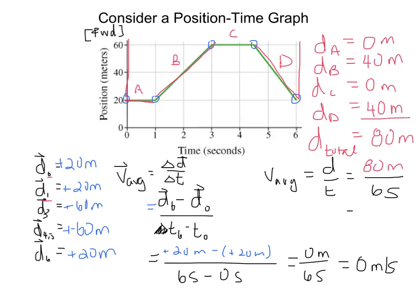And we end up with an answer of 13.3 repeating meters per second. So I'm going to just round that to 13 meters per second, which is obviously a different answer than you got for the average velocity.